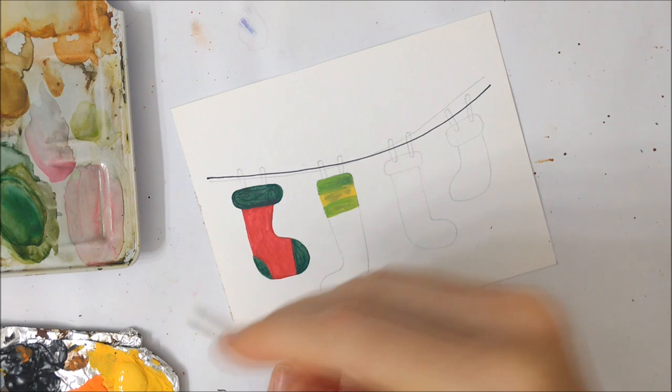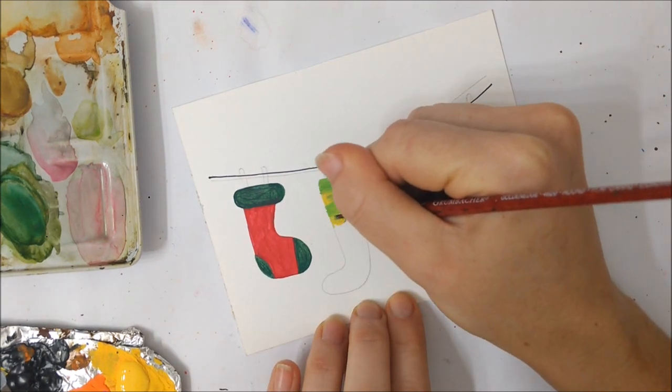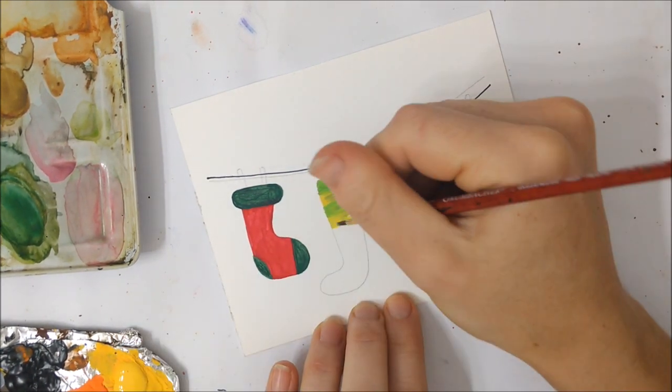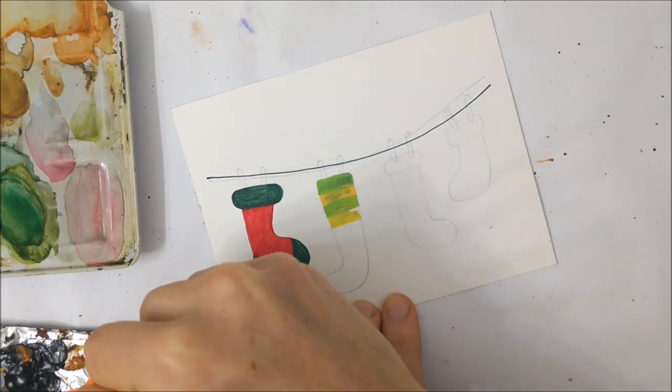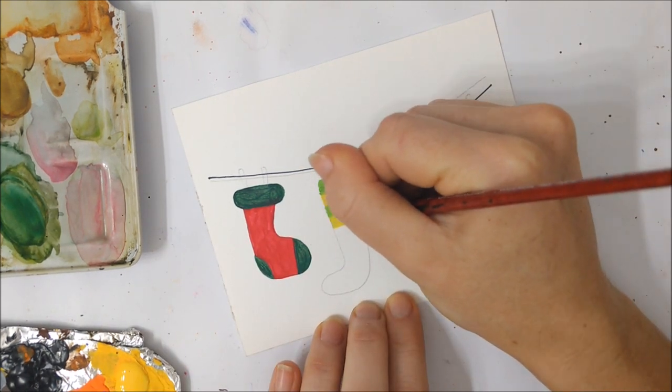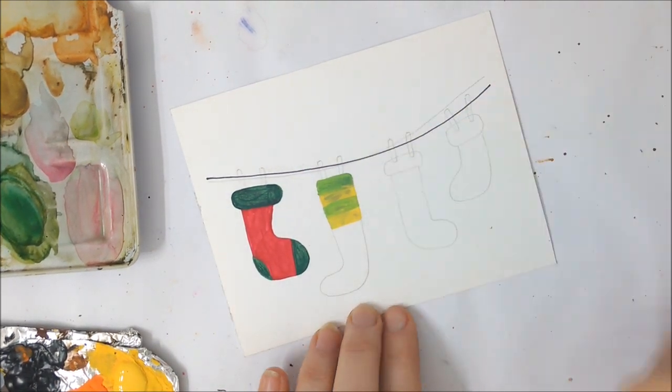Watercolor doesn't do that, unfortunately, so just make sure you leave two white notches for those clothespins to attach to the stocking to make it look like they're hanging.